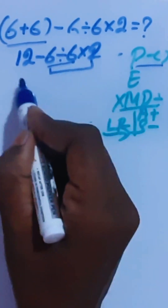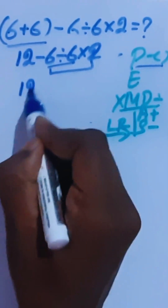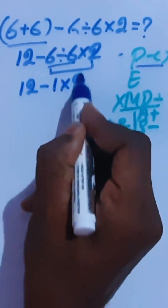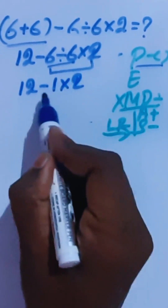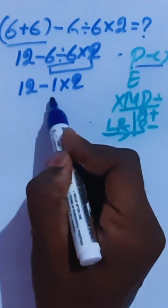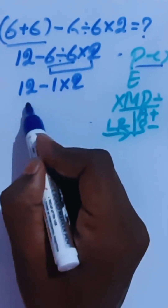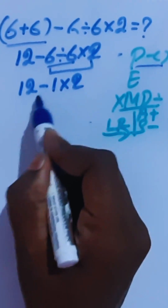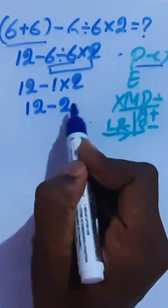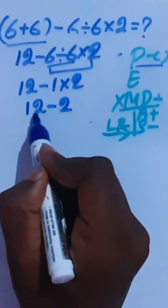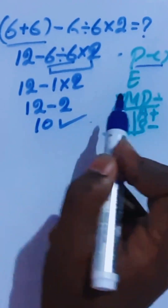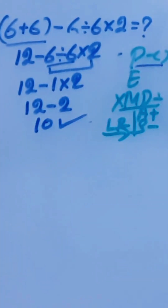So, left to right: this gives us 12 minus 1 times 2. Here, we have subtraction and multiplication. Multiplication is higher priority than subtraction. So, 12 minus 2. Here, 12 minus 2 is 10. 10 is the correct answer.